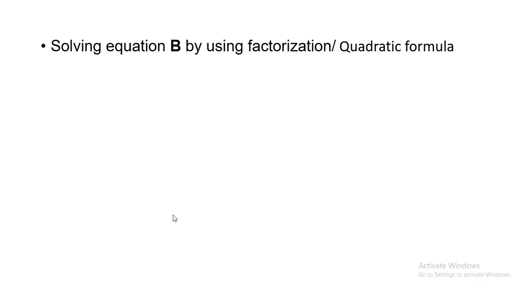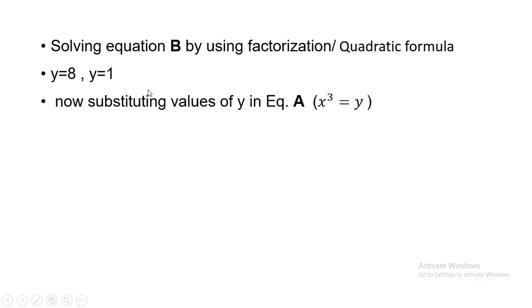I have solved equation B using factorization, the quadratic formula, or perfect square method. The two answers after solving the second order equation are Y = 8 and Y = 1. Now I substitute these values of Y into the initial supposition, equation A: X³ = Y. So X³ = 8 and X³ = 1.